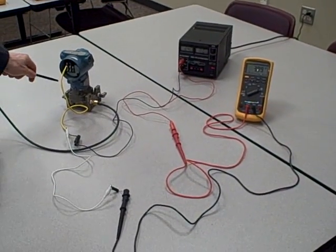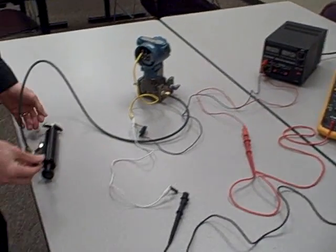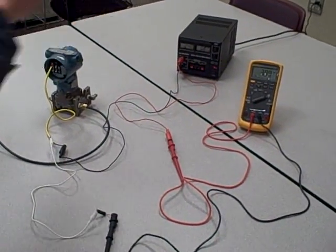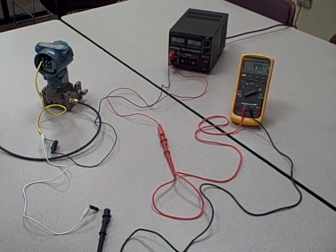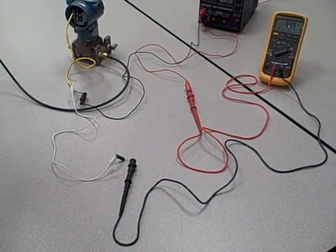Here we have a Rosemount Model 3051 differential pressure transmitter connected to a hand pump where we can apply air pressure. We have this transmitter powered by a 24 volt power supply. We're measuring the current using a Fluke 87-4 meter and we also have the current going through a 250 ohm resistor.